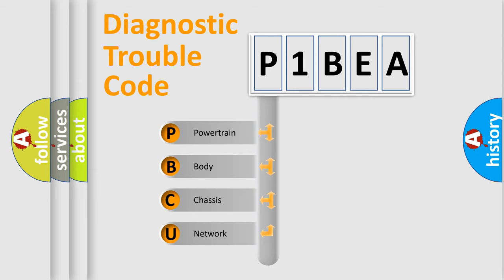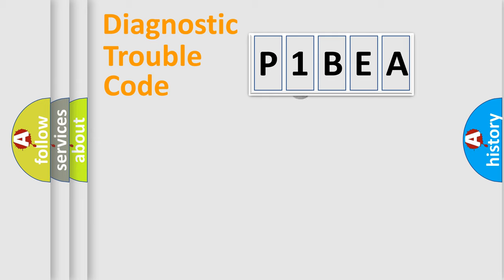We divide the electric system of an automobile into four basic units: Powertrain, Body, Chassis, and Network. This distribution is defined in the first character code.